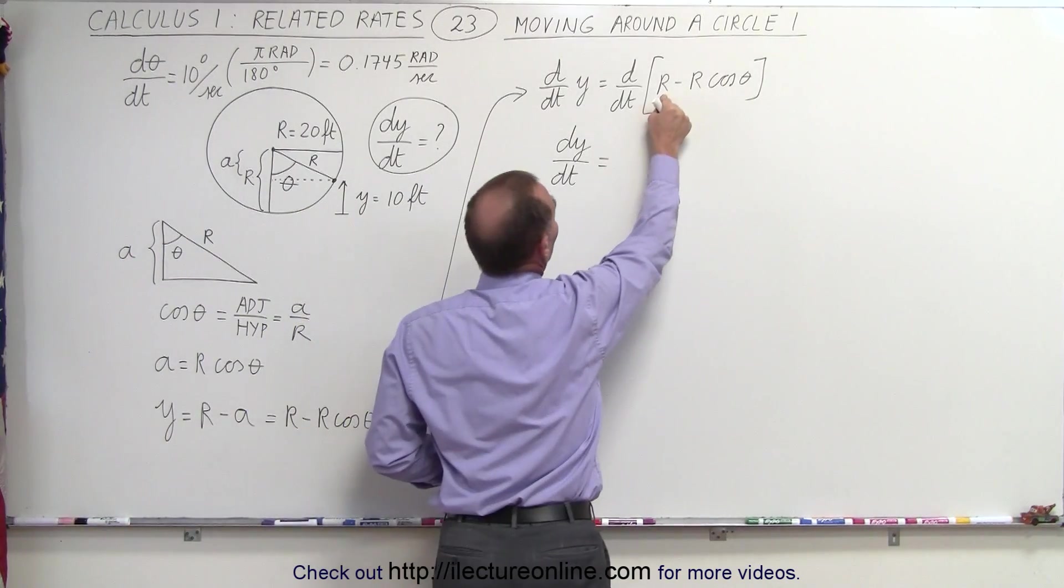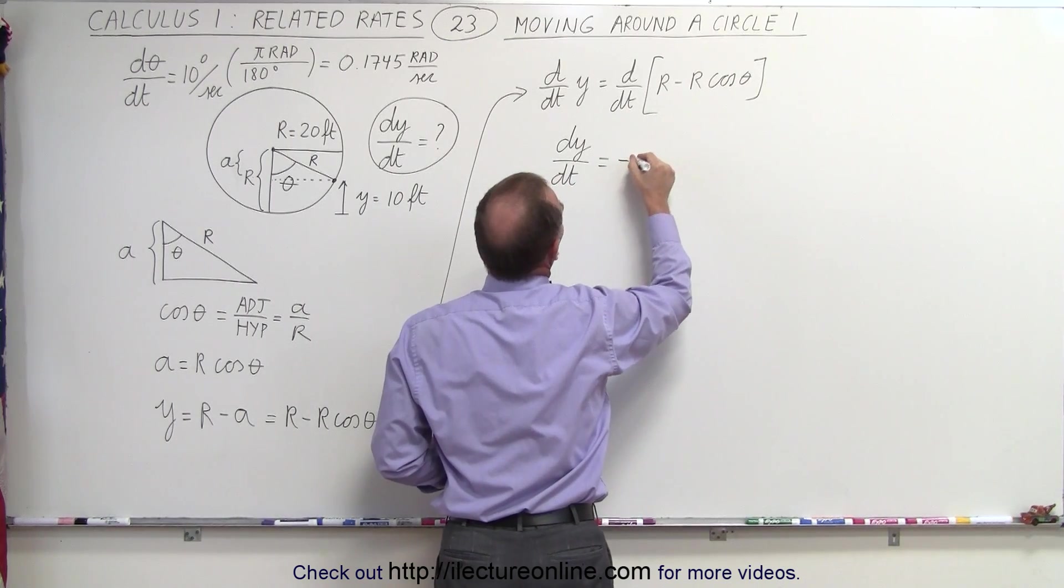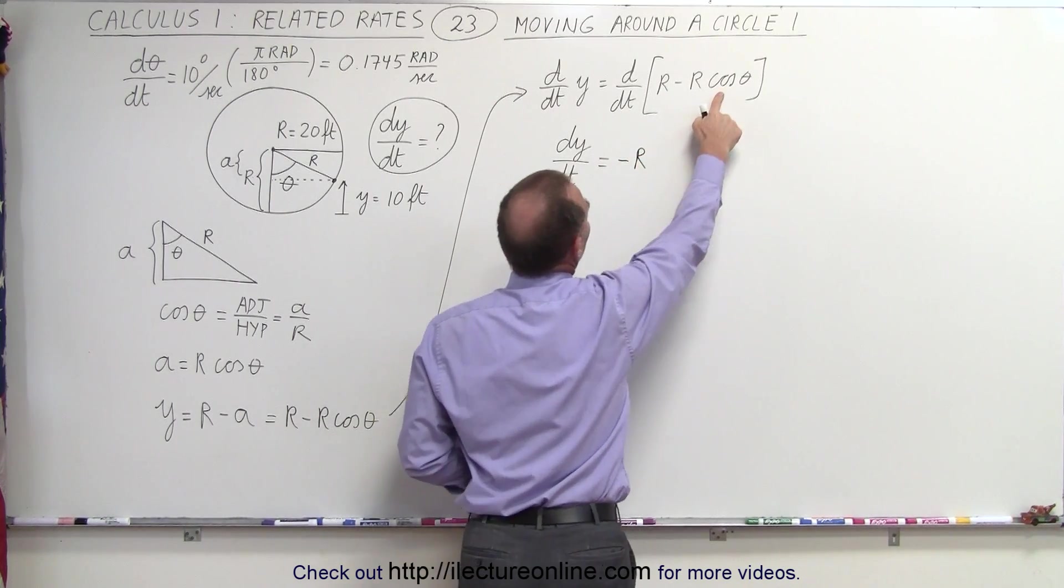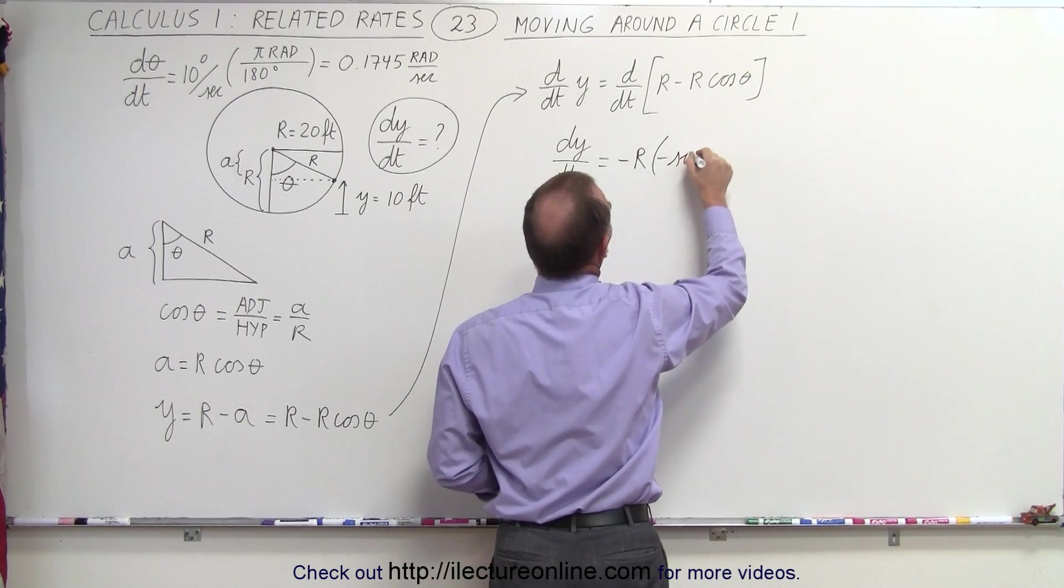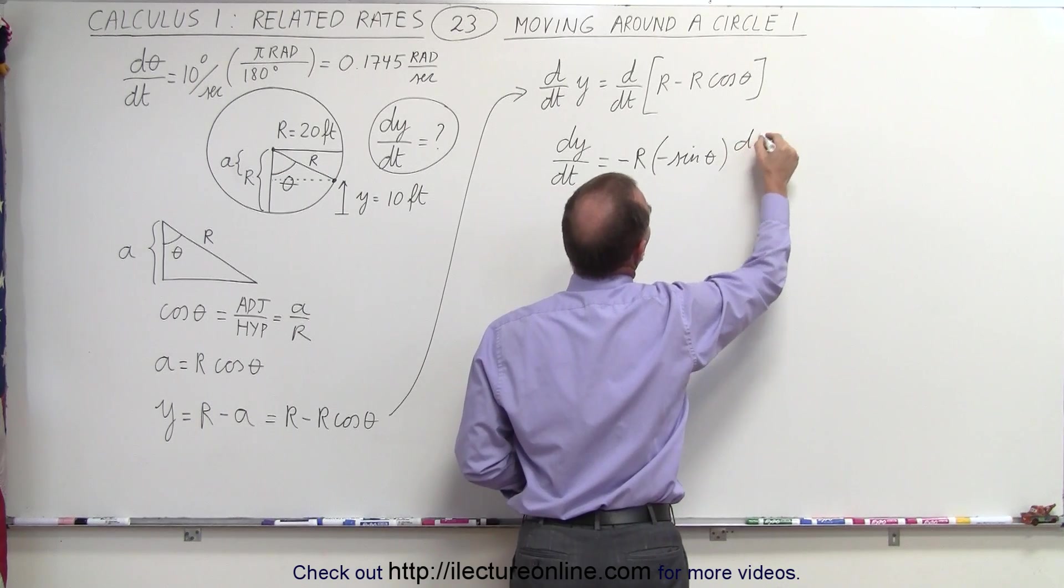And we just have to take the derivative of this. So it's going to be minus r times the derivative of the cosine of theta, which is the minus sine of theta, times the derivative of the angle, which is d theta dt.